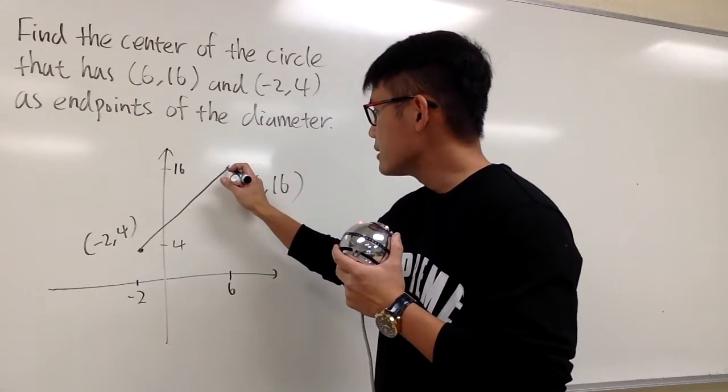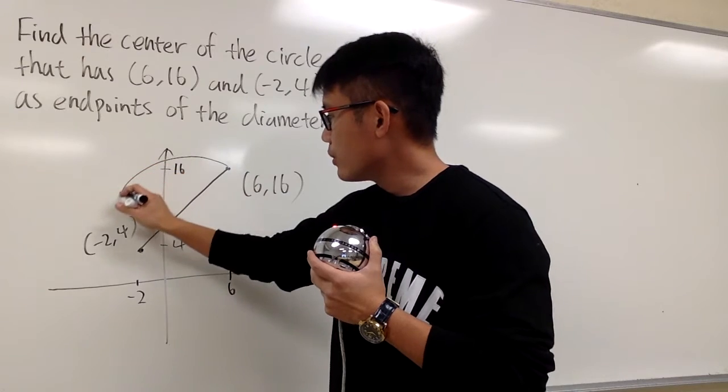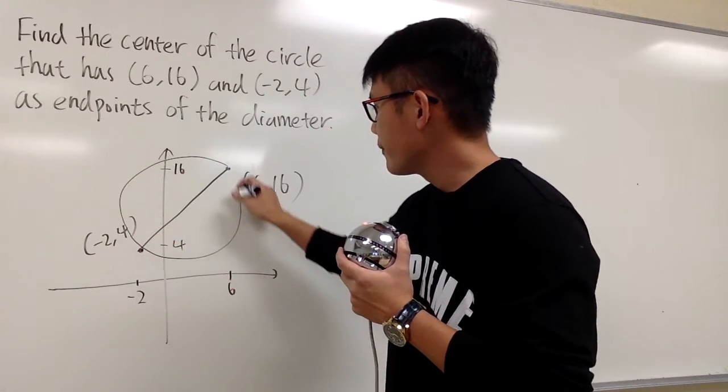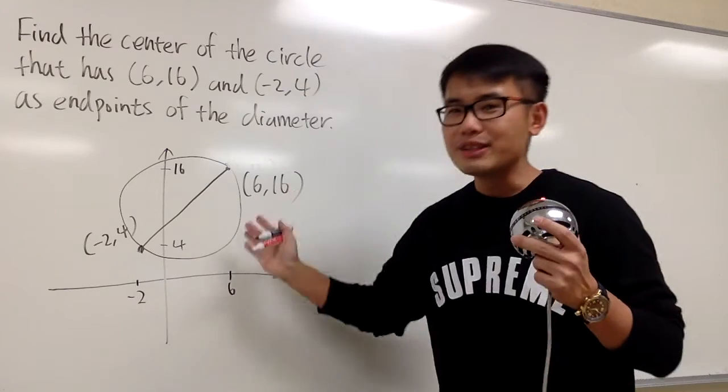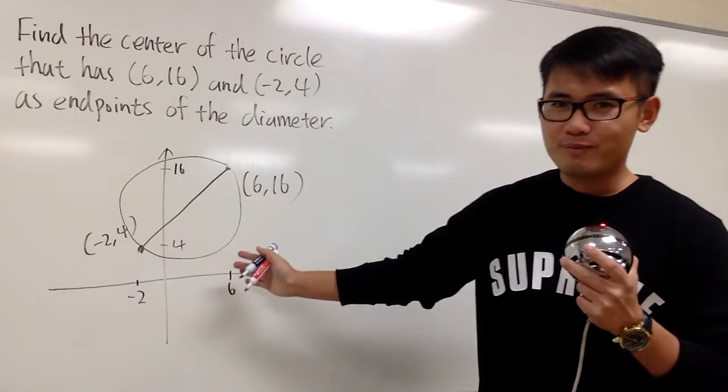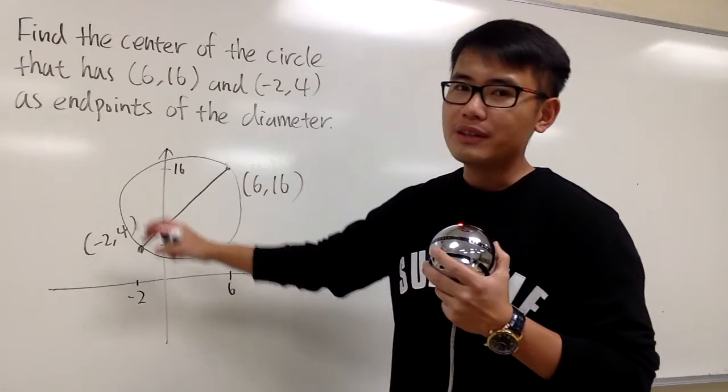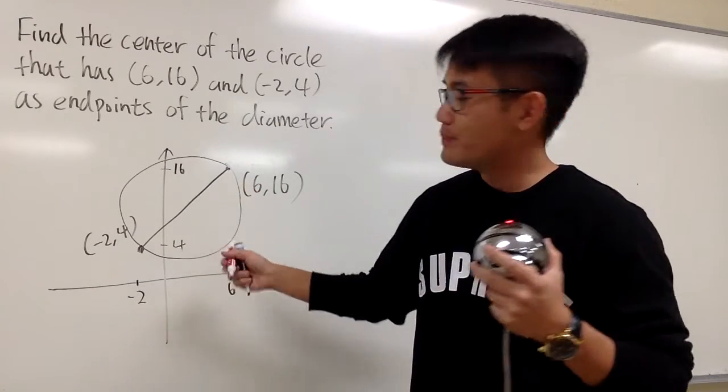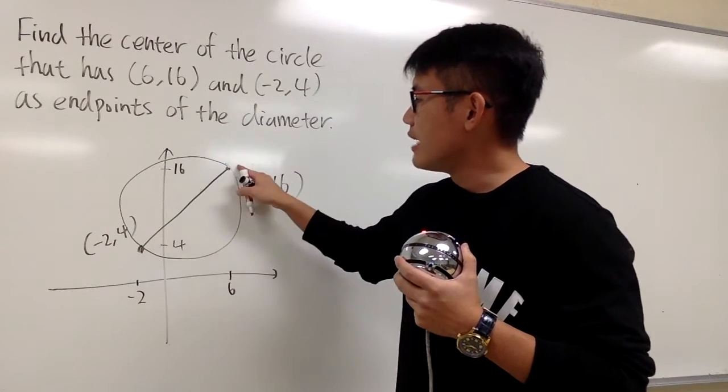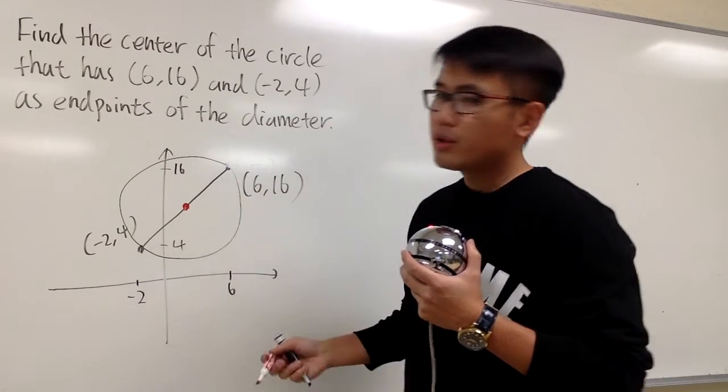The circle is going to look like this. So, I'm just going to draw you guys a circle like that. Okay? This is the circle. I know it's not perfect, but it is a circle. And we are going to find the center of this circle. Well, this is one end, this is the other. The center is going to be right in the middle.